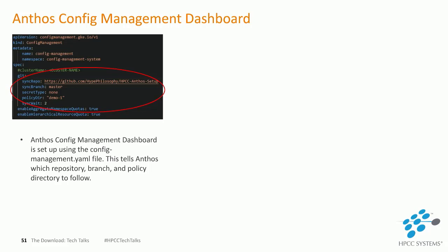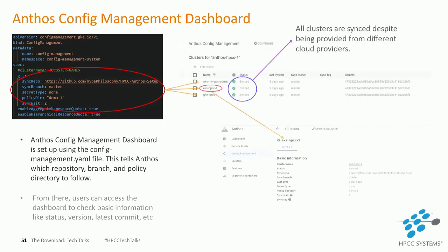The Anthos Config Management Dashboard helps you automate policy and security at scale in hybrid cloud and on-premises container environments through the cloud console. It is a simple way to implement configurations through code, set up to use the configmanagement.yaml file. This tells Anthos which repository, branch, and policy directory to follow. From there, users can access the dashboard to check basic information like status, version, and latest commit, and all clusters are synced and being controlled through Anthos.